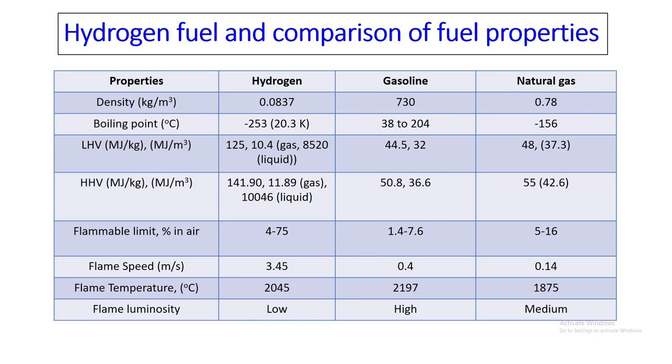We need to know flame speed, flame temperature and flame luminosity. Flame speed is very high in case of hydrogen compared to gasoline and natural gas. Flame temperature is about 2045 degrees Celsius, which is between gasoline and natural gas. Flame luminosity is low — the flame is not very bright, making it essentially an invisible flame. This makes it very difficult to detect where the flame is when considering safety of hydrogen combustion.